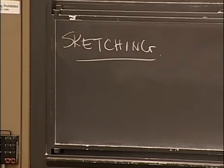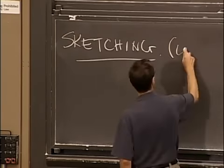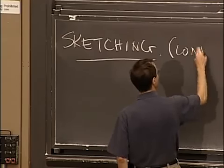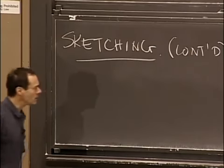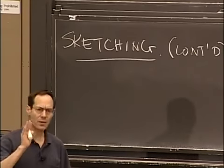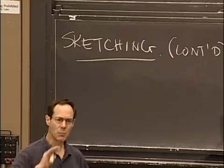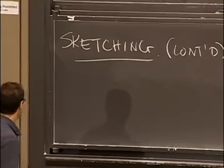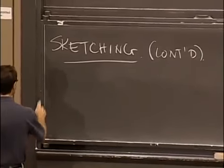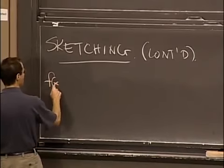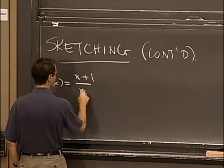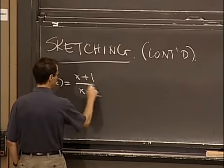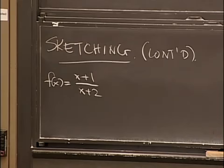So this is a continuation. I want to give you one more example of how to sketch things, and then we'll go through it systematically. So the second example — we did one example last time — is this. The function is (x+1)/(x+2).